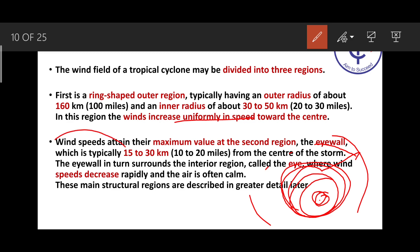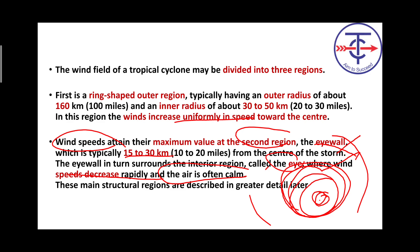At the outer circle edge, there is another region. One more important thing about the eye: it has completely cool and calm conditions at the center. Wind speed increases as you come from outside inward, increasing very rapidly — but at the center itself there is no speed. Wind speed attains maximum at the second region — the eye wall — which is 15 to 30 km from the center. Eye wall surrounds the interior region called the eye, where wind speed decreases rapidly and air is often calm.